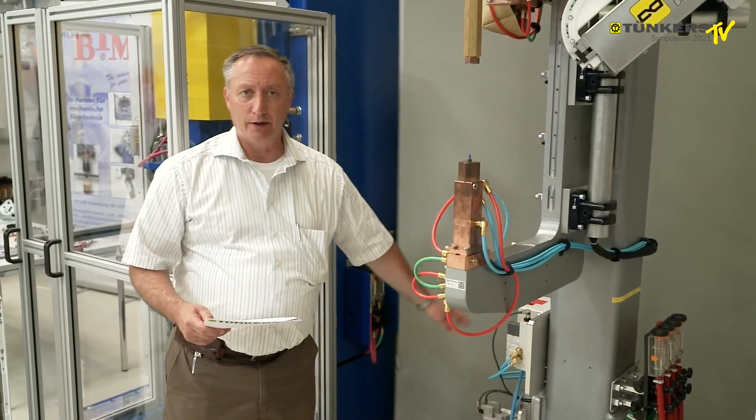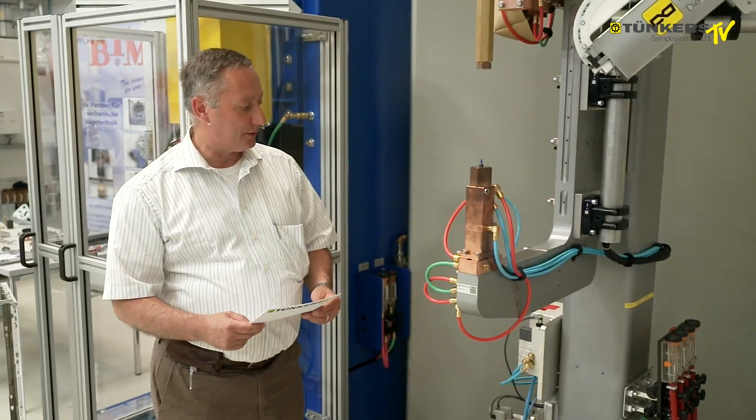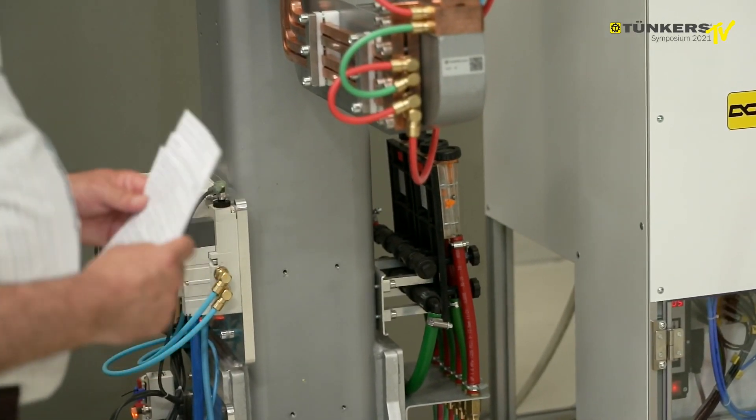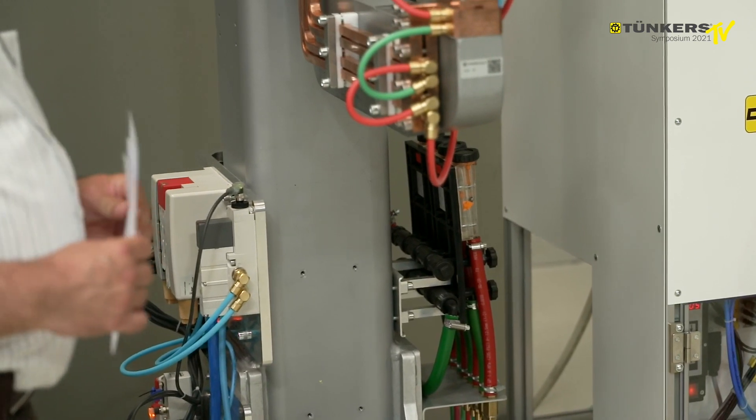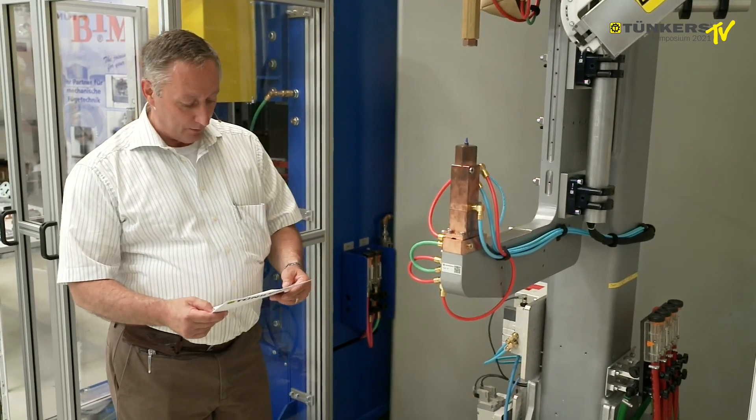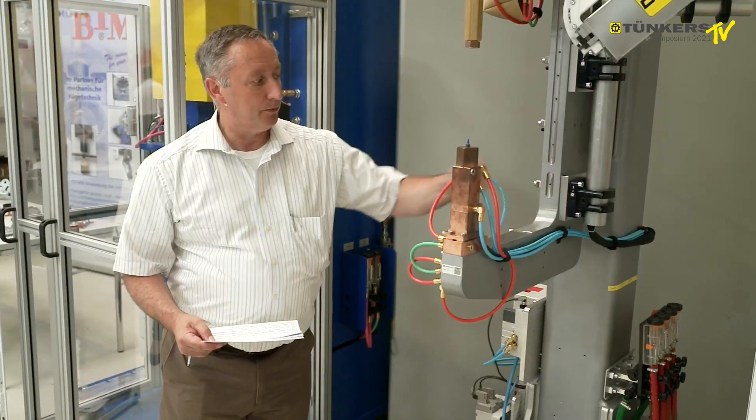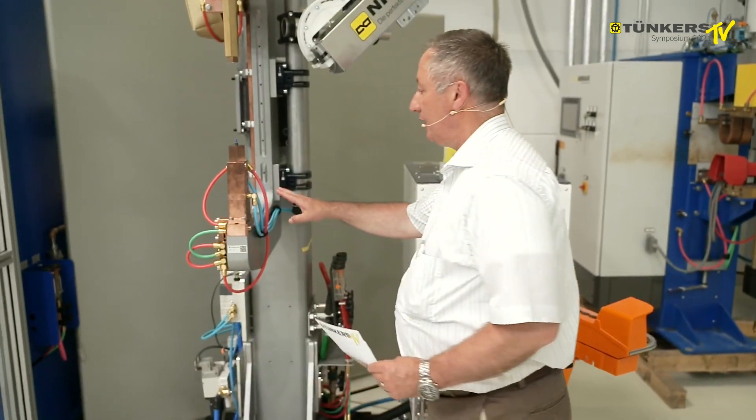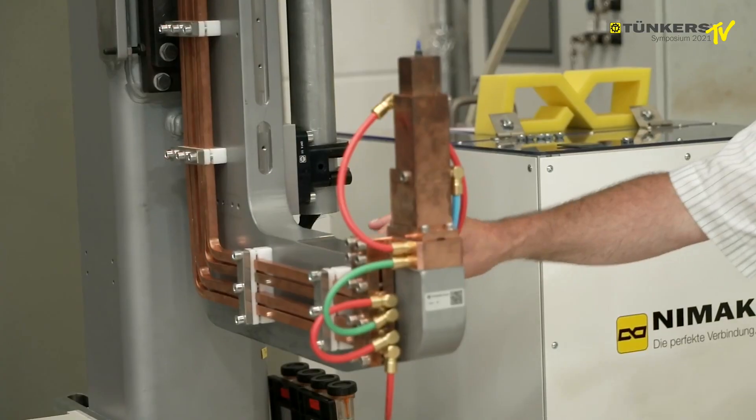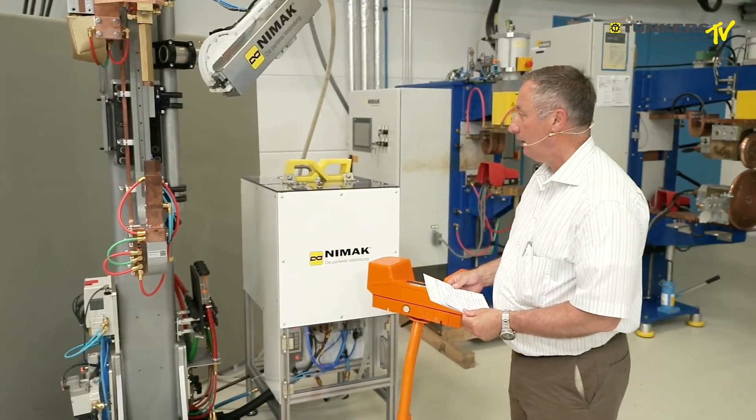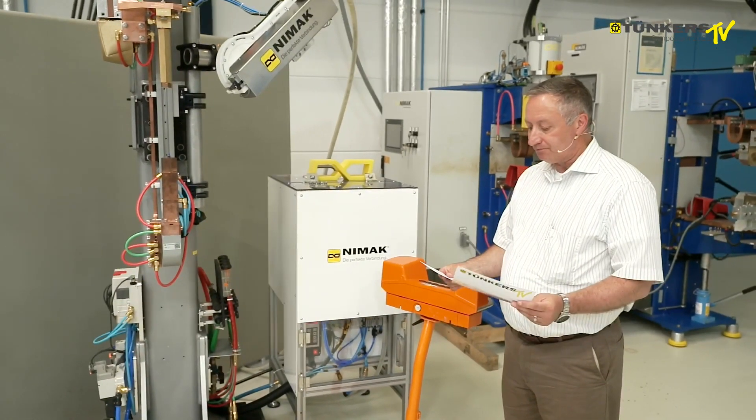Furthermore, we have a pneumatic unit, which has now reached performance level D, cooling water distribution with the individual cooling in separate control as well as a flow-through measurement. Furthermore, Niemak feeding unit, and last but not least, the Tunkers C-frame from the reforming technology modular kit.